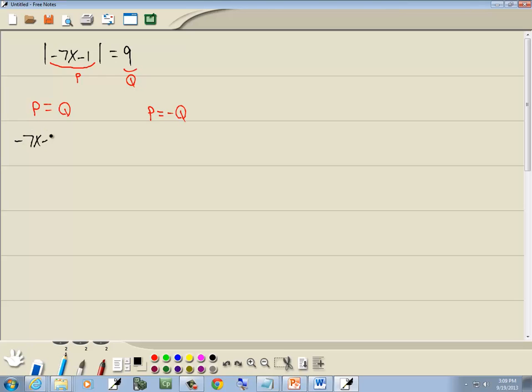So we've got negative 7x minus 1 is equal to 9, and negative 7x minus 1 is equal to negative 9.